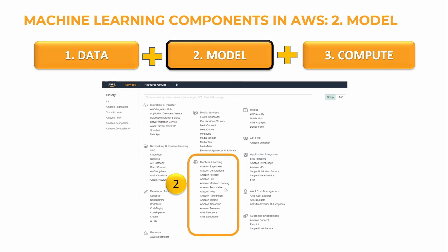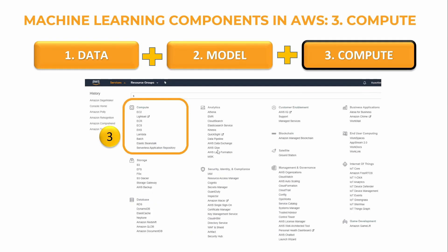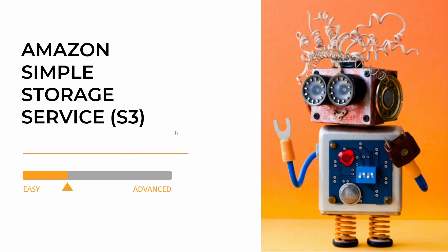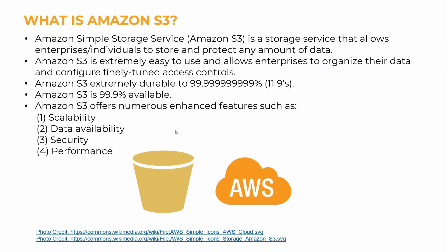When it comes to the model, we can use Amazon SageMaker, where we have tons of readily available built-in algorithms, and we're going to learn about many of those algorithms over the next couple of lectures. We also learned about compute — here we have EC2 and Lambda — and today we're going to have an entire lecture where we learn about EC2. So let's go ahead and learn about Amazon S3.